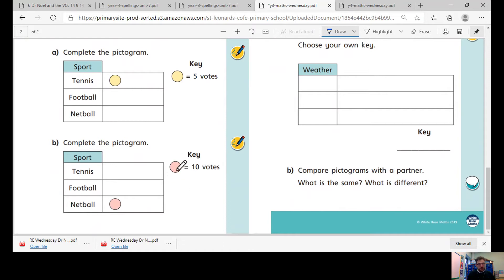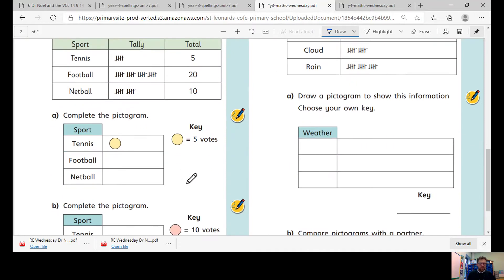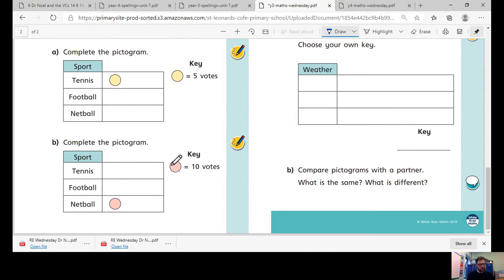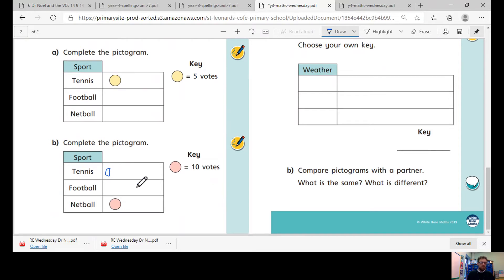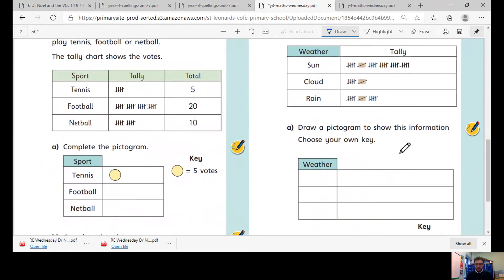Now if you notice, only five people chose tennis, but each circle represents 10. Now five is half of 10, so hopefully you can realize that instead of drawing a whole circle to represent 10, we need to draw a half circle to represent five, not a whole circle.